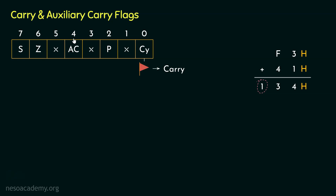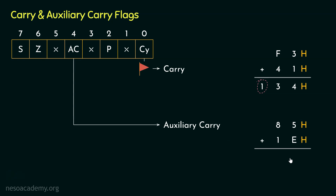Let's now focus on bit position number 4, which is AC or Auxiliary Carry. To understand this flag, let me show you another addition. In the least significant digits, we are adding 5 with E. Now, E is 1 less than F, so if we take 1 from 5, it becomes 4, and this becomes F. With F, since we are adding 4, the result is the same. As the sum, we get the value 3, and there will be a carry. Now performing the addition between all three: 1 plus 8 is 9, and 9 plus 1 is A in hexadecimal — that's 10 in decimal — so we will have the result A. Although we haven't got the carry from the entire addition, we have gotten a carry from the addition of the least significant digits. Such a carry is known as the Intermediate Carry, Half Carry, or Auxiliary Carry.